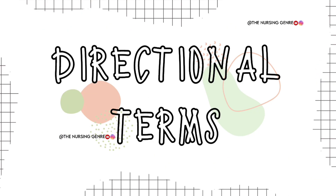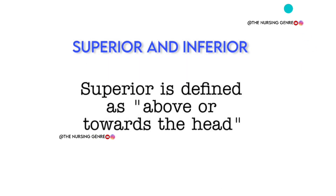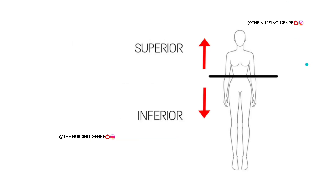First one is directional terms. We will talk about superior and inferior differences. Superior is defined as above or towards the head. If we look at the picture, towards the head and above — the eye is superior.